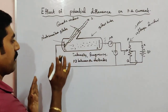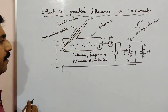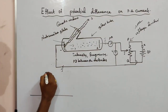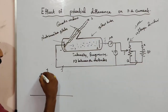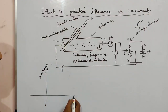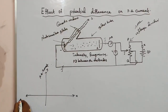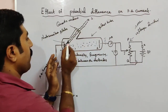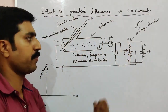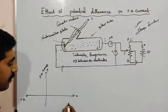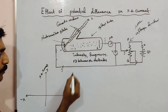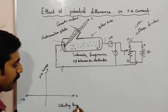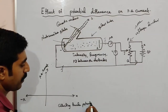We have a potential difference in the cathode plate, and we also have a negative potential difference. We have a graph for you — see the graph. This is the y-axis showing photoelectric current. We have a positive x-axis and a negative x-axis.